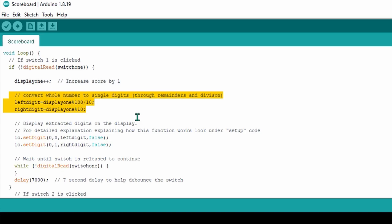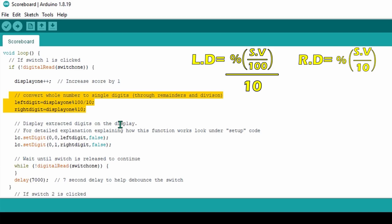How this all works is that left digit takes the score value and divides it by 100 and saves the remainder of that calculation. Then left digit will equal whatever the answer is to that remainder being divided by 10. This differs for right digit because right digit will simply equal the remainder of the score value being divided by 10.